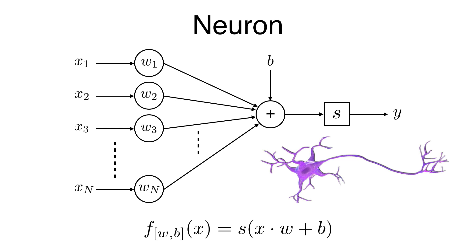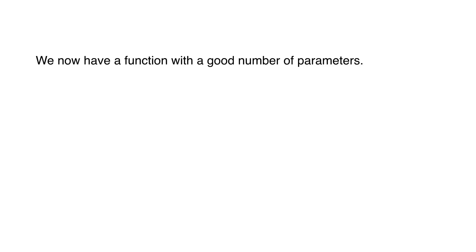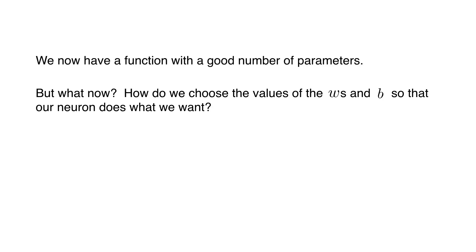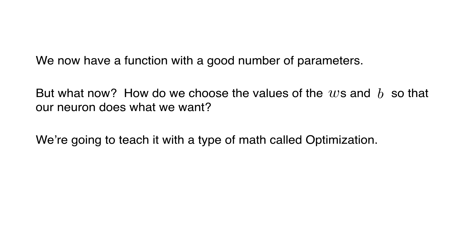Our mathematical expression for the neuron takes the output of the adaptive combiner, x·w + b, and sends it into the sigmoid function. We now have a function with a good number of parameters. How do we choose the values of w's and b's so that our neuron does what we want? For this, we're going to use a type of math called optimization to teach the neuron.